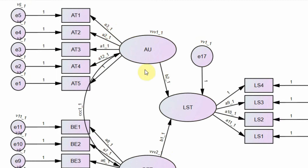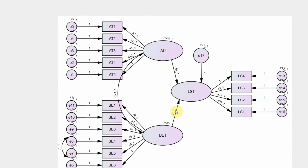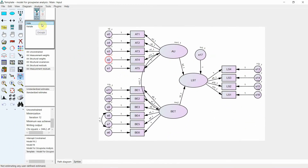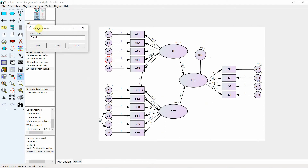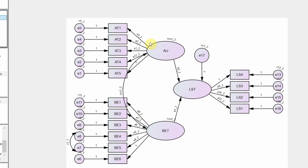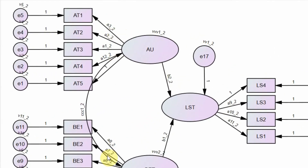The underscore one suffix indicates the first group (male), and the underscore two suffix indicates the second group (female). So for example, B1_1 is a structural relationship in group one, and B1_2 is the same relationship in group two.